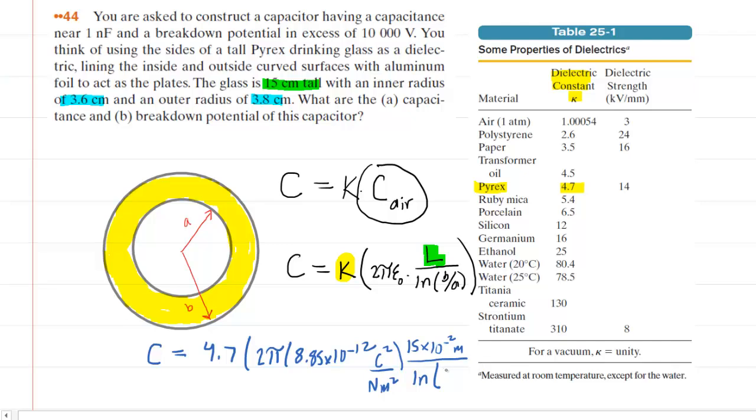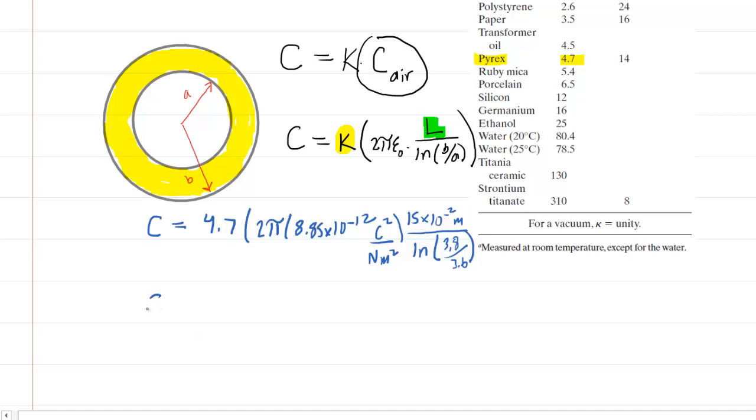You don't need to put in the centimeters because they'll cancel. So you pick up your calculator, you would punch this in, and when you do so, you would get approximately 7.25 times 10 to the negative 10, and the standard unit of capacitance is farads.